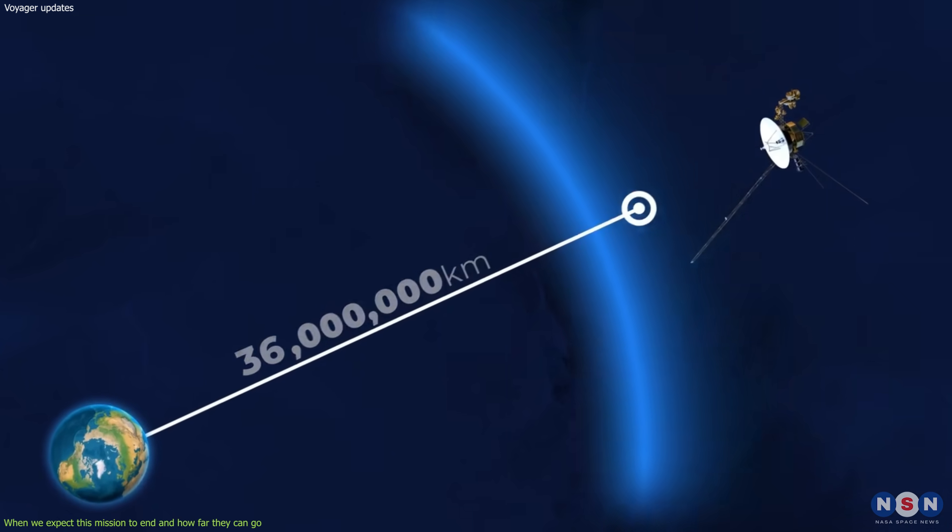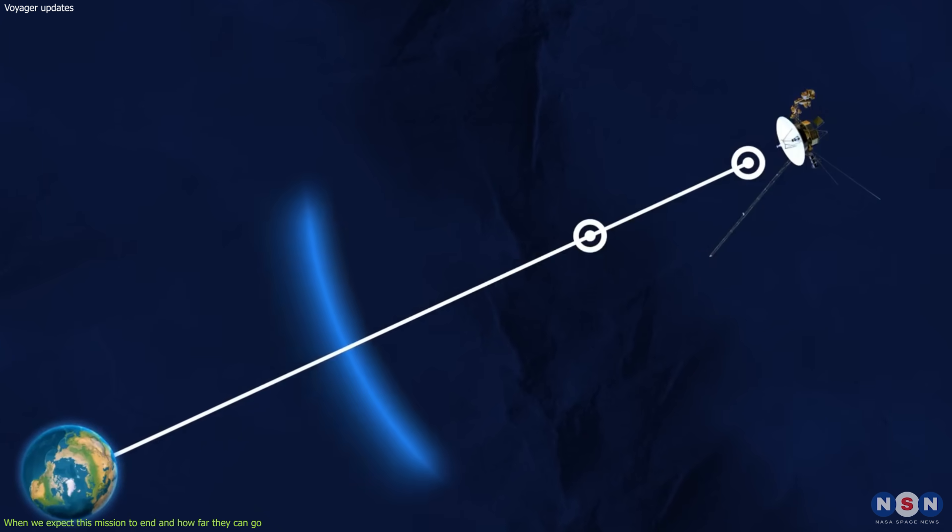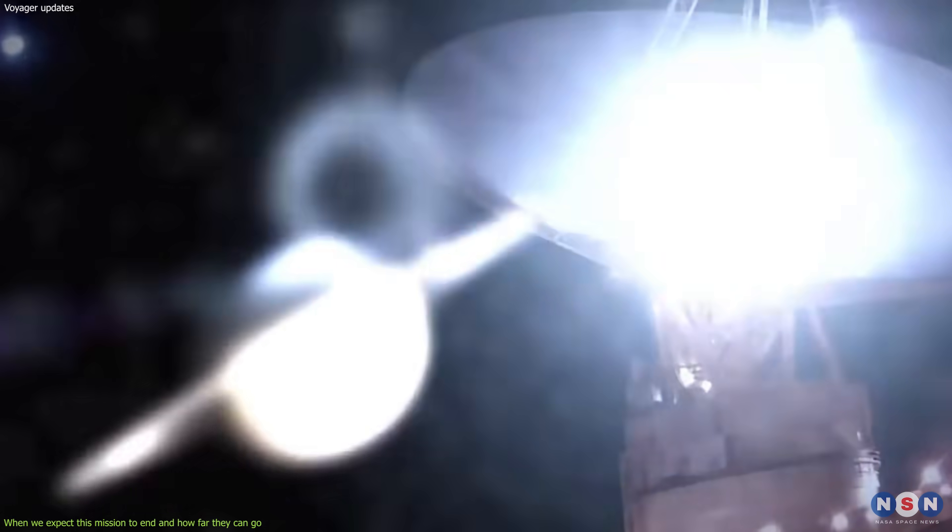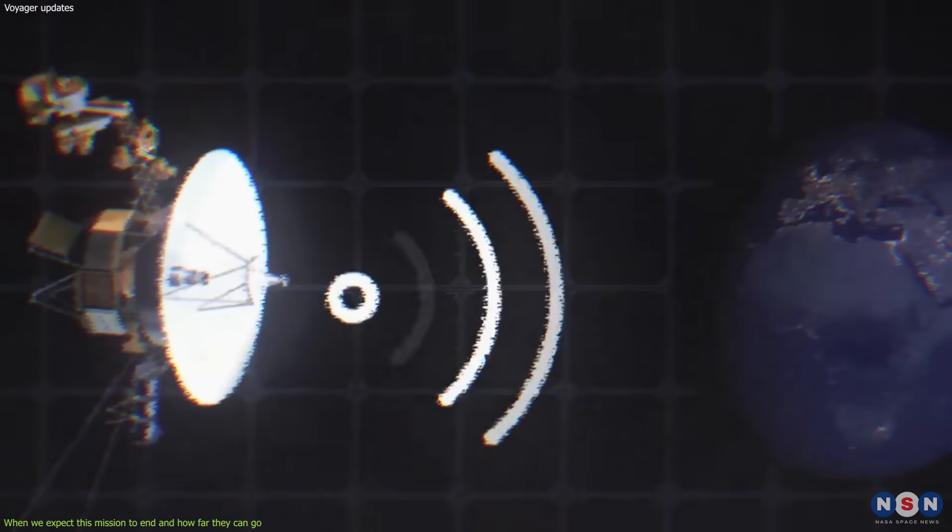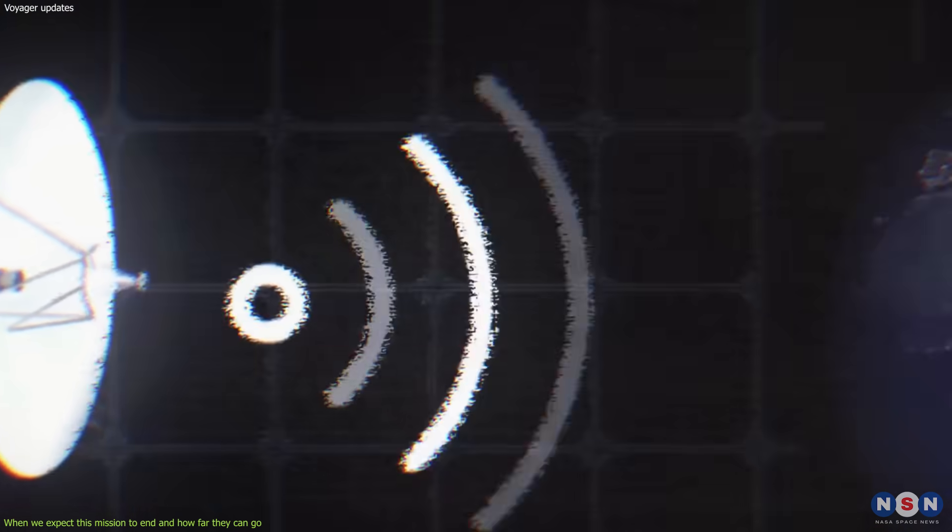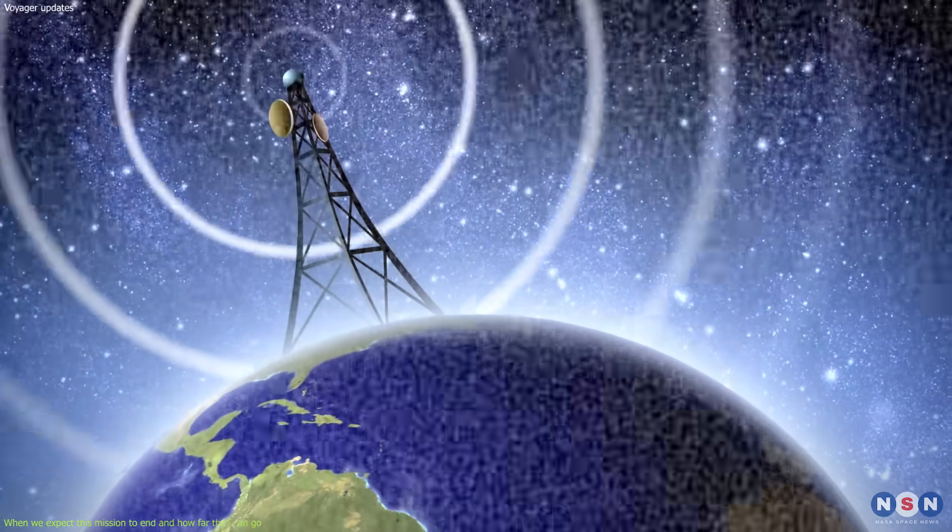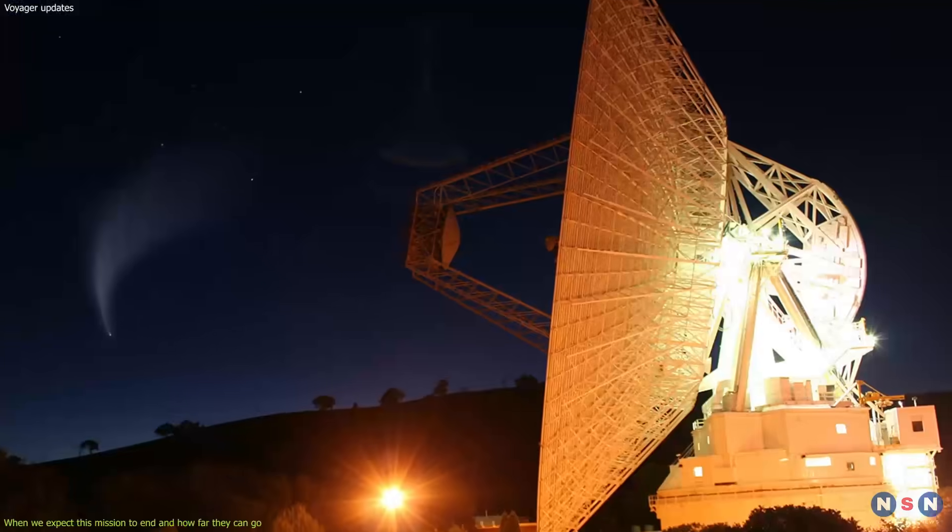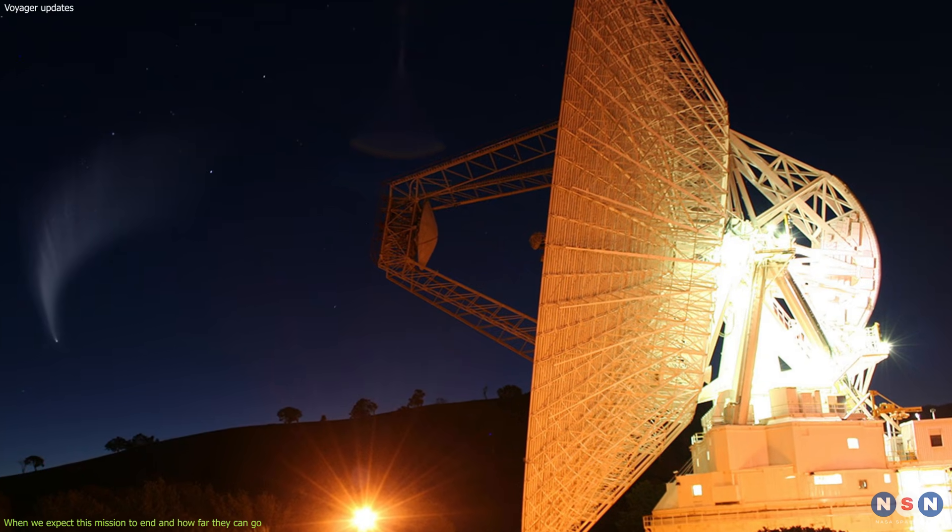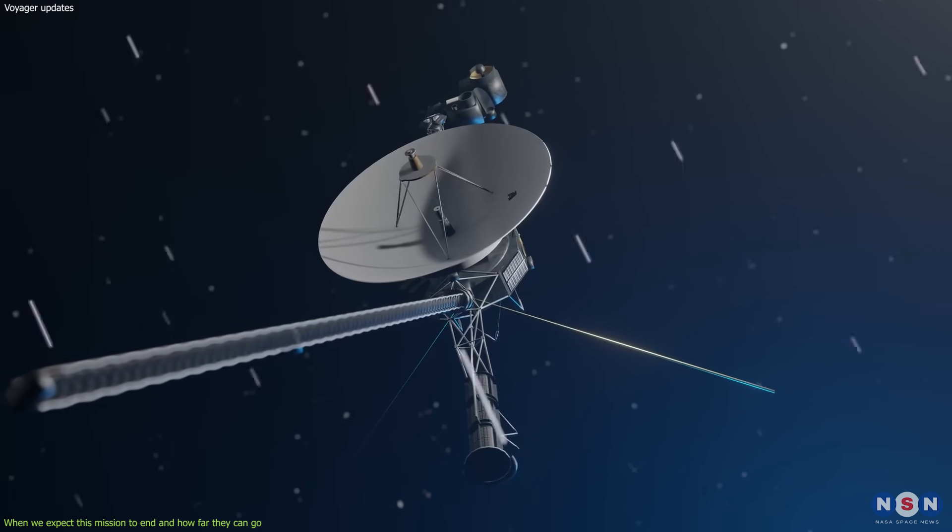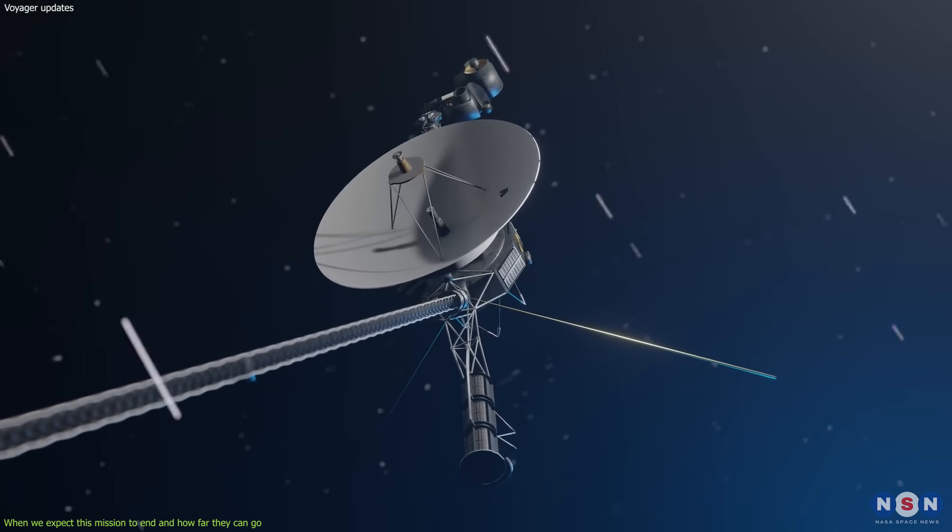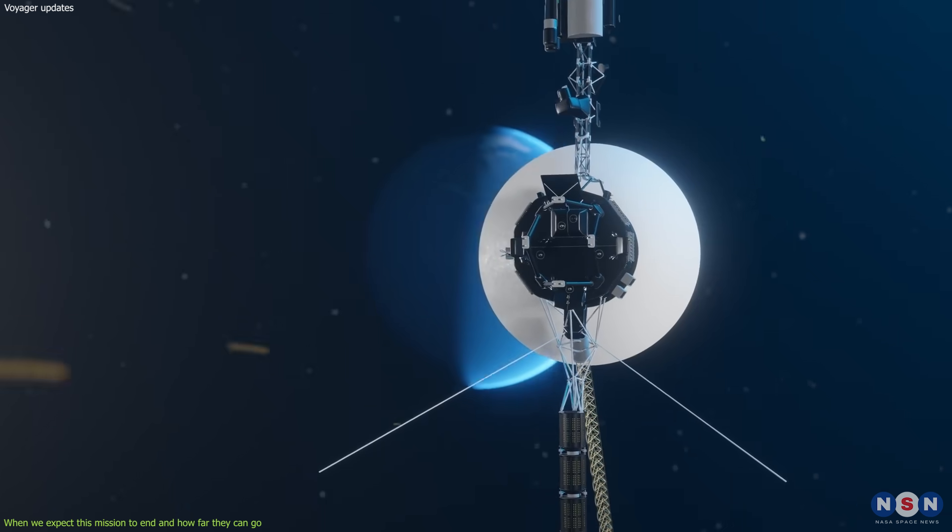The communication capability depends on the strength of the radio signals and the availability of the ground stations that receive them. The signals from the spacecraft become weaker as they travel farther away from us. They also become more affected by noise and interference from other sources. So the ground stations have to use more sensitive receivers and larger antennas to detect them. They also have to compete with other missions and projects that need the DSN. The current estimates are that we will totally lose contact with the spacecraft by around 2036.